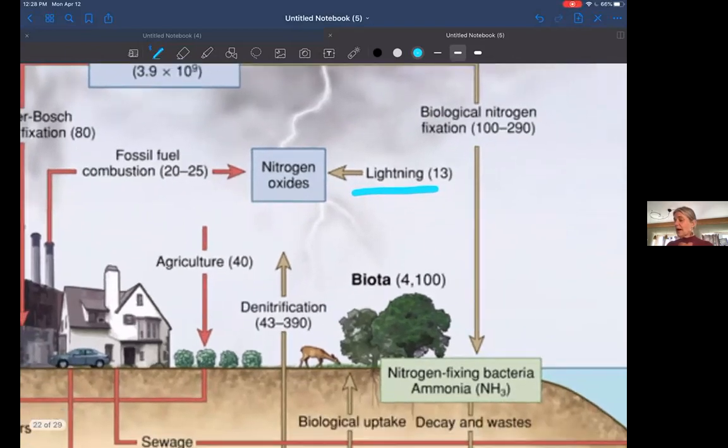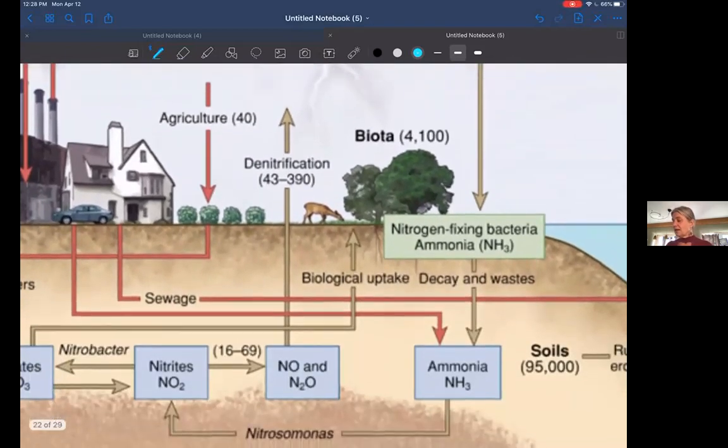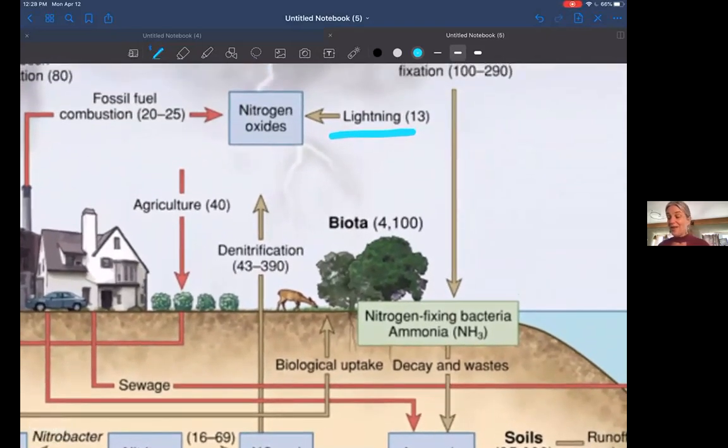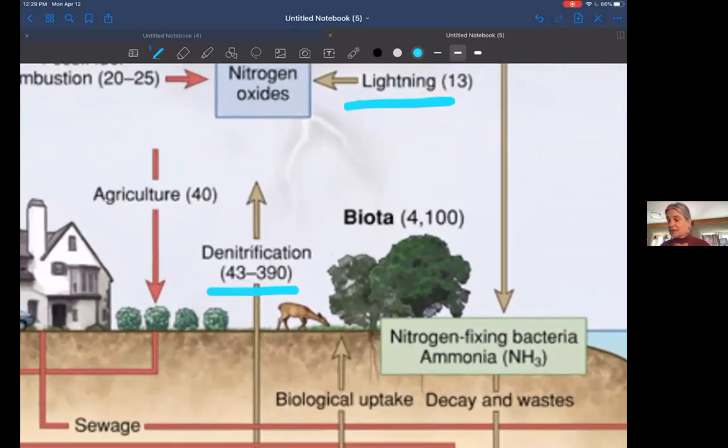We also have the ability of bacteria to release nitrogen from the soil back into the atmosphere. That would be a process of decomposition, which is called denitrification. Denitrification is the opposite of nitrogen fixation.